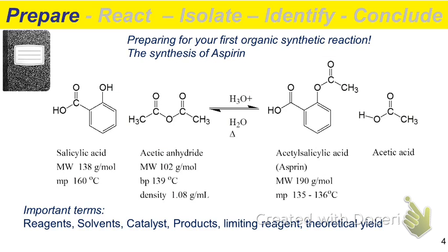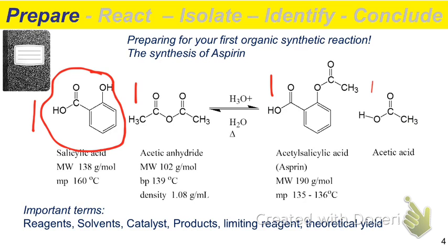To convert moles of starting material into moles of product, you go back to your balanced equation and see what the relationship is. If I give you one molecule of salicylic acid, how many molecules of aspirin could you potentially make? Only one — it's a one-to-one ratio. We have implied ones in front of each reagent, and if we take one molecule of salicylic acid, it only shows up one time in the product.